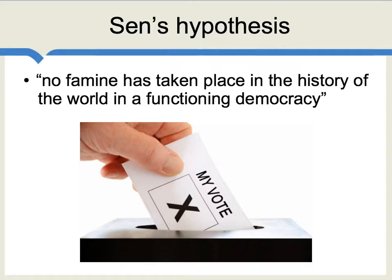Sen had a simple and striking hypothesis, namely that no famine has taken place in the history of the world in a functioning democracy.